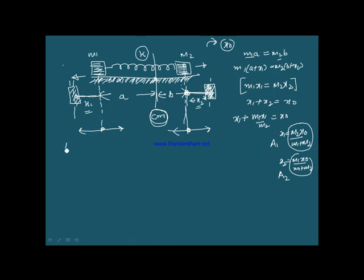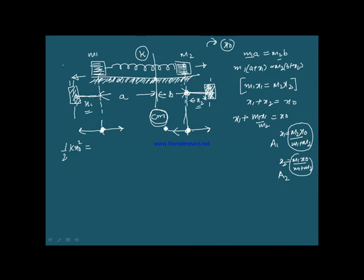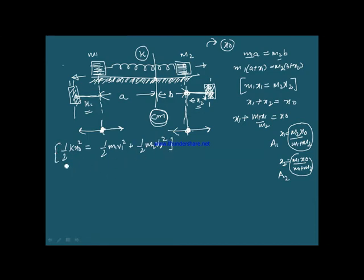What is the initial energy of the system? The initial energy is ½k·x0². This energy will be stored as the kinetic energy of the two masses plus the spring potential energy at any given point. At the moment when these masses are crossing back through their mean positions, there is no extension in the spring, so all energy is kinetic: ½M1·v1² + ½M2·v2² equals the initial potential energy ½k·x0².